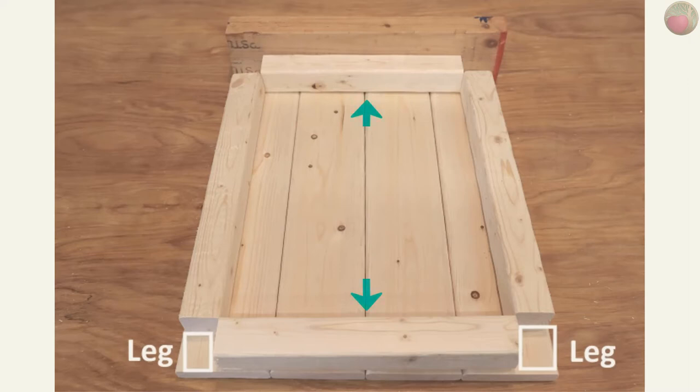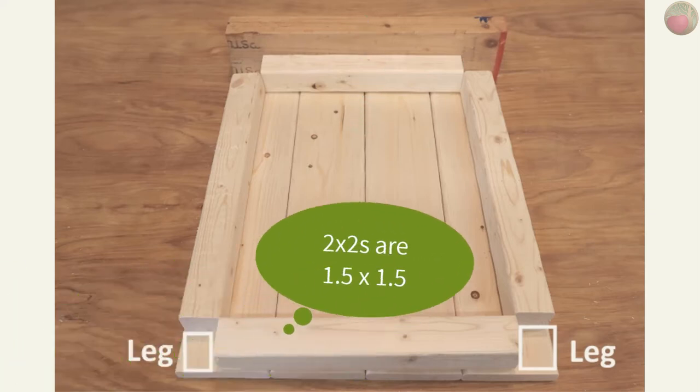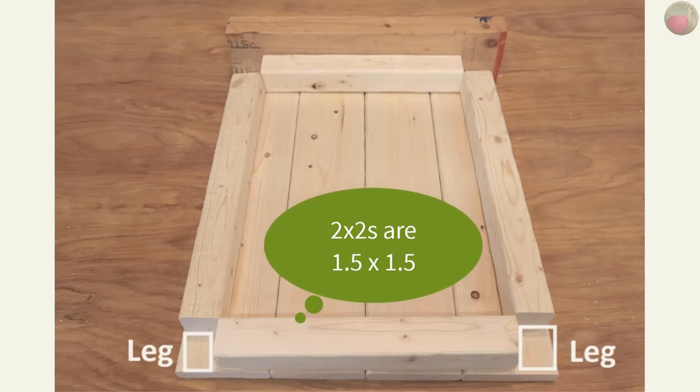And then cut the stretcher 2x2s to that length and lay them side to side at the top and bottom. Leave room for the 2x2 legs, and remember that 2x2s are actually 1.5 inches by 1.5 inches.